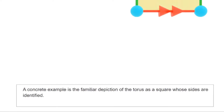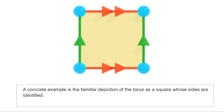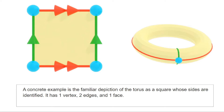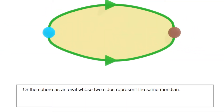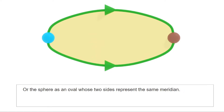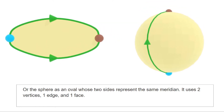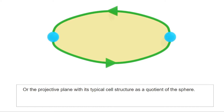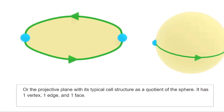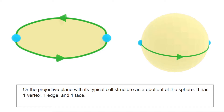You have probably seen surfaces depicted as planar representations. A typical one depicts the torus as a square with opposite sides identified — this is the description you get when viewing the torus as a quotient of the plane. We can also describe the sphere as a polygon with two sides identified with one another, giving a cell structure with poles as vertices and a meridian as the edge. If we identify the edges in the opposite direction, this forces the two vertices to be the same, producing the typical planar representation of the projective plane. On the right, you can see how this cell structure lifts to the two-sphere, which is the universal cover of the projective plane.